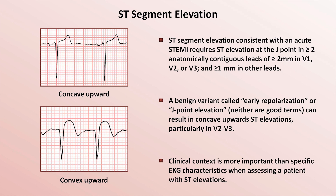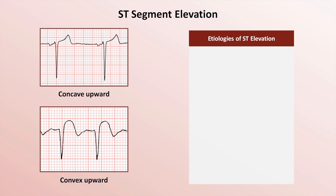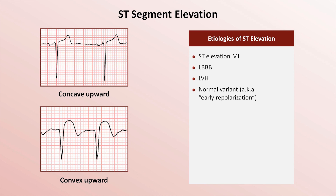Overall, the clinical context is more important than specific EKG characteristics when assessing a patient with ST segment elevations. When it comes to the etiologies of ST elevation, there is a surprisingly long list. Obviously at the top is an MI — specifically what is referred to as an ST elevation MI or STEMI. The other three common causes are left bundle branch block, left ventricular hypertrophy, and the normal variant just mentioned. The elevation present in these other three causes is usually, though not always, limited to leads V1 through V3.